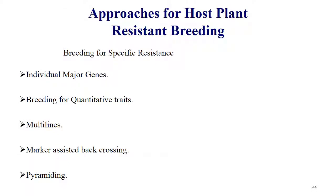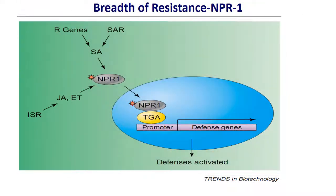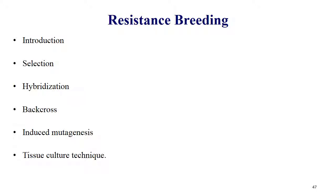Approaches for host plant resistance in breeding include: breeding for specific resistance using individual major genes, breeding for quantitative traits, breeding with multilines, marker-assisted backcrossing and pyramiding. Breeding techniques used are introduction, selection, hybridization, backcrossing, induced mutagenesis, tissue culture, and modern techniques like transgenics and genome editing.